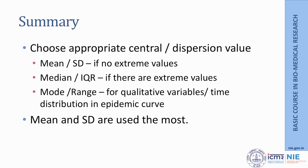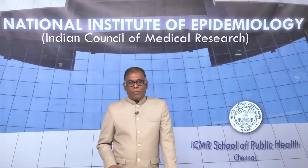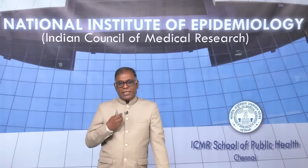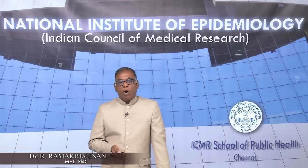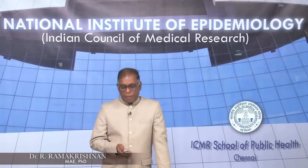In summary, we must choose appropriate central and dispersion values. Mean and standard deviation are most appropriate when there are no extreme values. If extreme values are present, you can use data transformations to still apply mean and SD, though that requires expert handling; otherwise use median and interquartile range, which do take care of extreme values. Mode and range are normally used for qualitative variables and time distributions in epidemic curves. Mean and standard deviation remain the most used measures of variability and summary statistics.